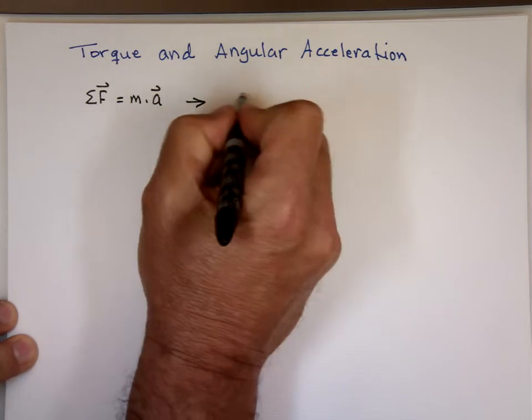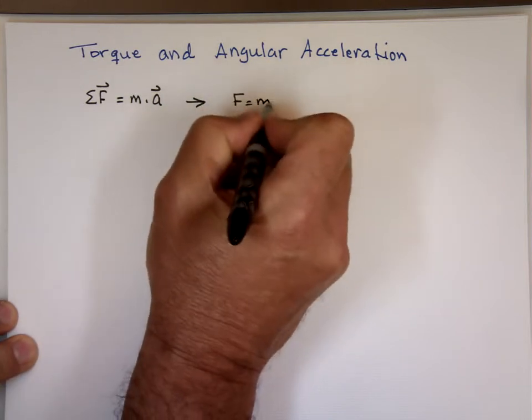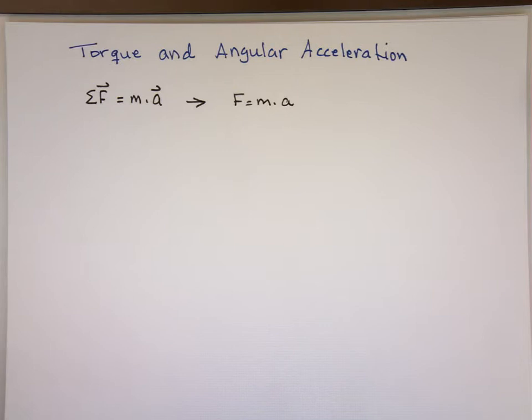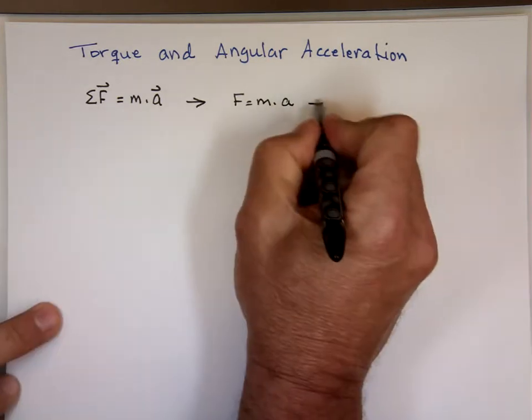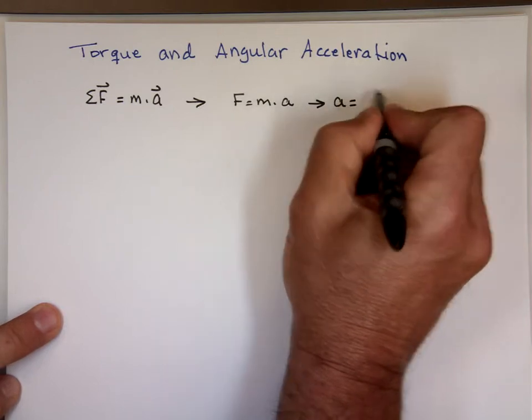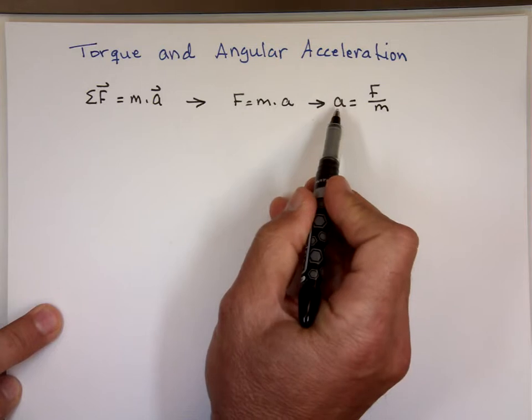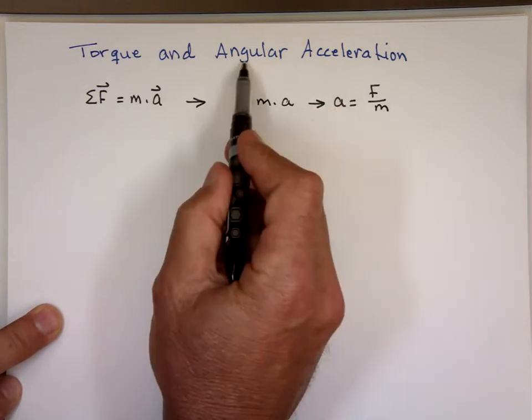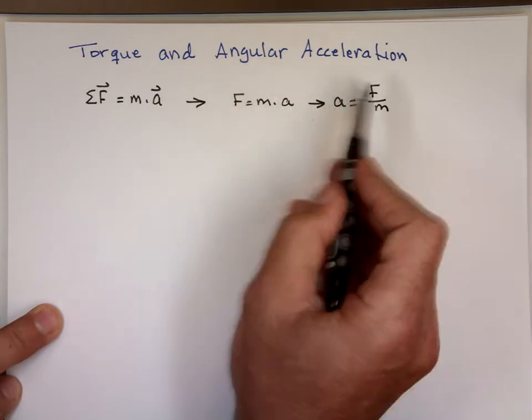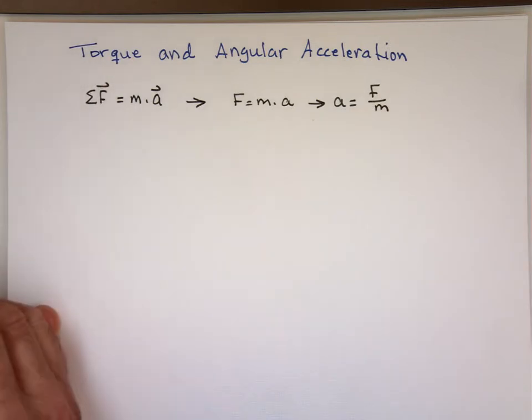An easier way of saying F equals Ma. If you look at that equation and solve it for A, you end up with A equals F over M. A is linear acceleration, not angular, so that doesn't help me. F is force, not torque, that doesn't help me either.